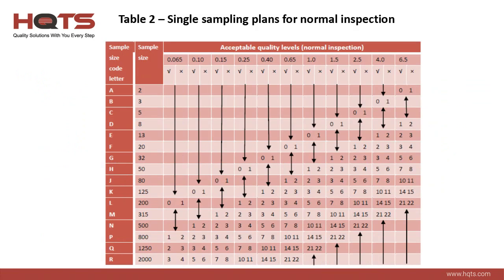In this slide we see Table 2, Single Sampling Plans for Normal Inspections. In Table 2, you see a check mark in the third row down — this means it has passed, and the X means the number for fail. If you see up arrows, use the first sampling plan above the arrow. If the sample size equals or exceeds the lot or batch size, then just go ahead and do a 100% inspection or piece by piece inspection. Looking at the down arrows, use the first sampling plan below that arrow.